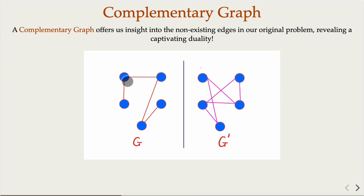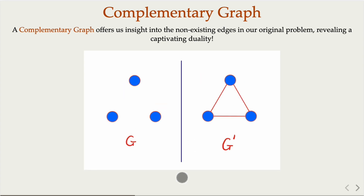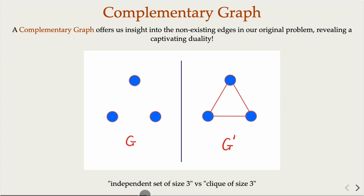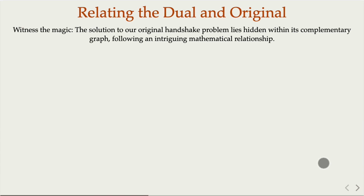For example, here is the original graph, and here is the complement graph, where connections are made wherever the original has none. If three people have no handshake among them, in the complementary graph they form a complete subgraph — a clique of size 3. So an independent set of size 3 in the original corresponds to a clique of size 3 in the complement. With this, we can form a dual problem.